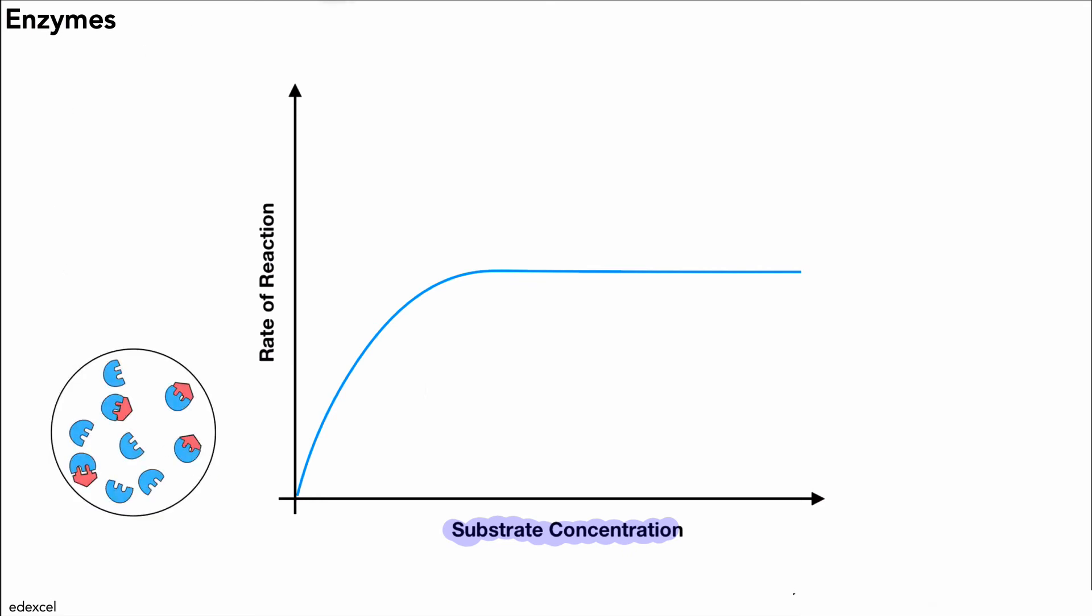So here we can see our enzyme molecules in blue, and in red, that's our substrate molecules. This is a low substrate concentration. And as you can see, some of the active sites of the enzymes are unoccupied because the concentration of the substrate is so low. So there's our unoccupied active sites. That leads to a low rate of reaction.